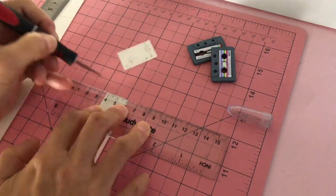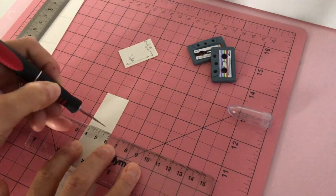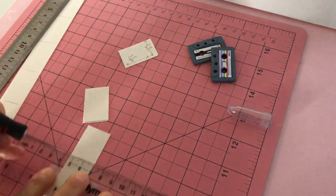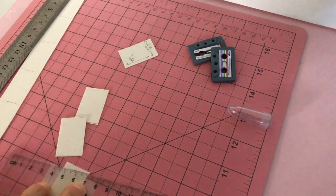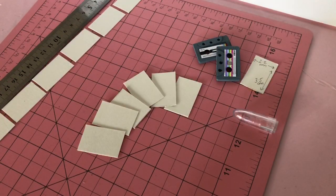Just measure, mark, then cut with scissors or an exacto blade. You will need six rectangles per cassette.